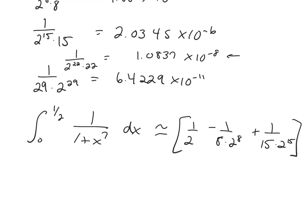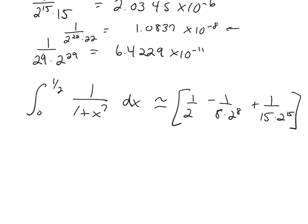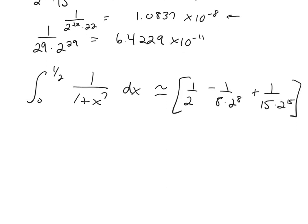To sum up parts A and B: we can use power series to integrate functions that we couldn't integrate before, and we can use them to give estimates on definite integrals. To do that, we use our error-bound information from alternating series.